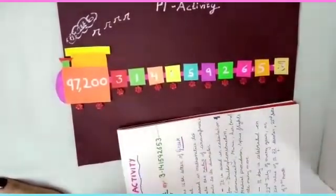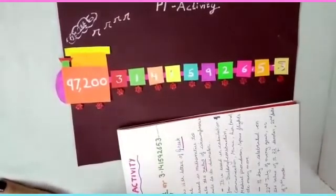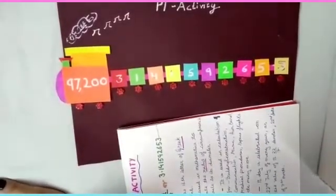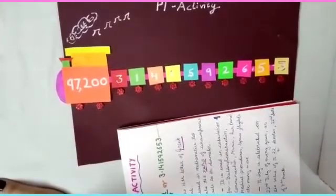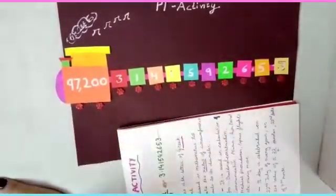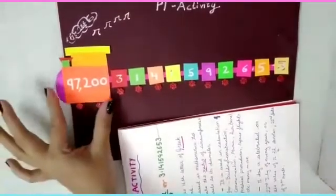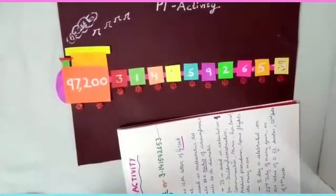And if you find multiplying difficult and if you are in a lower class and you haven't learned multiplication, but you know addition, then you can add all these 10 digits and you can write on this. And you can write on the front also.